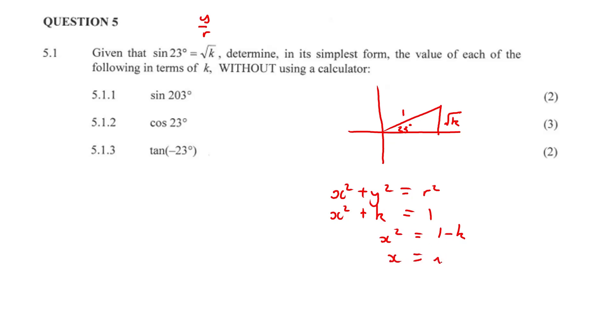We need to root both sides. So it becomes plus or minus root of 1 minus K. And as you can see here, X is on the positive side. So we're just going to take the positive value, which is root 1 minus K.